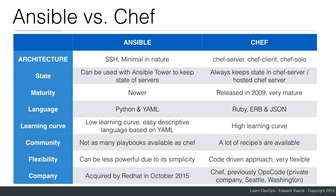Ansible was acquired by RedHat in October 2015, which might give Ansible an extra push to bring out more playbooks and maybe even change the pricing of Ansible Tower, because it's pretty expensive now for smaller and medium companies. Chef is a private company that was previously known as Opscode. They are based in Seattle.